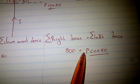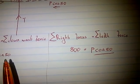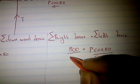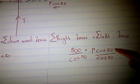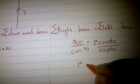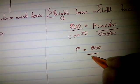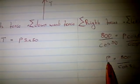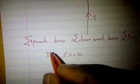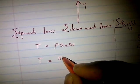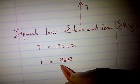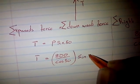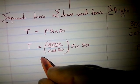Since there is only one variable on this side, we solve for P first. Dividing both sides by cos 50 to eliminate it, we get P equals 800 over cos 50. Then to find T, we substitute: T equals (800 over cos 50) multiplied by sin 50.